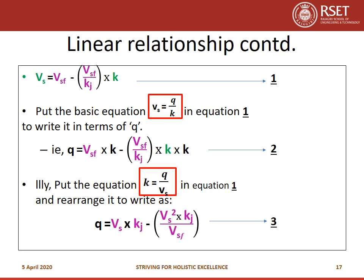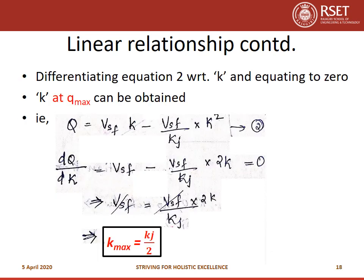Greenshield's linear equation (equation 1) can be written in different forms by substituting the basic equation of traffic flow Q equals Kv. Substituting Vs equals Q divided by K in equation 1 gives equation 2. Similarly, putting K equals Q divided by Vs gives equation 3. From Greenshield's linear equation, two new relationships between Q, K and V are obtained as equations 2 and 3, providing an avenue for finding density and velocity at which flow is maximized.